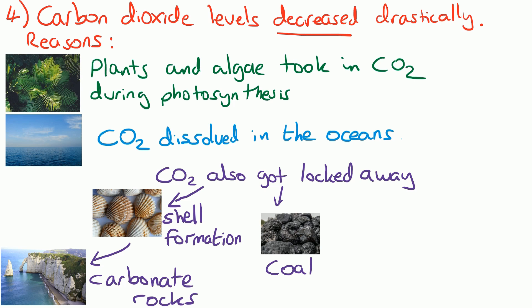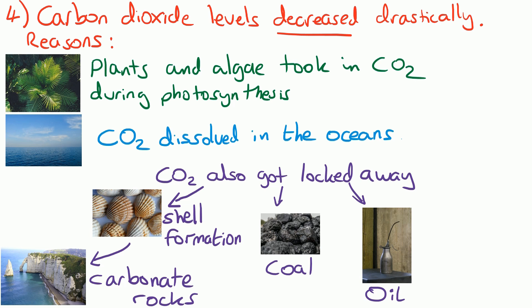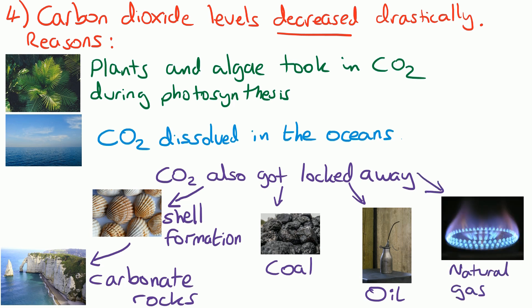Also, some carbon dioxide is locked away as coal. Coal is formed from trees that lived millions of years ago and fell in swamps, and they turned into coal, so that carbon dioxide was originally taken out of the air by those trees and is now locked up as coal. When we burn that coal it's releasing it back into the air. Similarly, when oil was formed, carbon dioxide was locked away, and the same is true as natural gas was being formed.